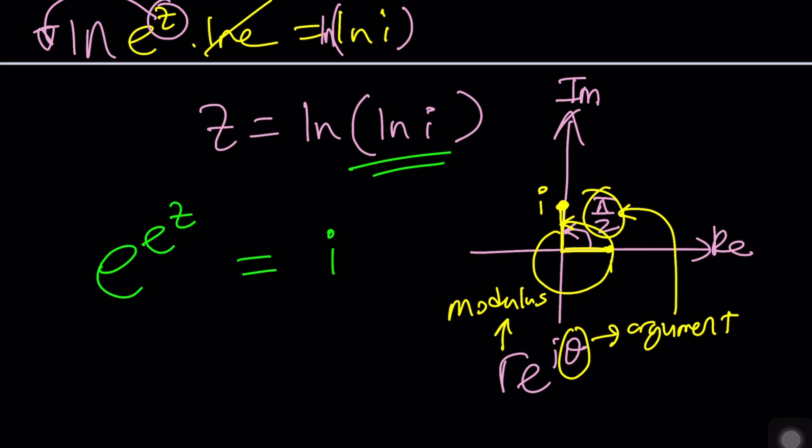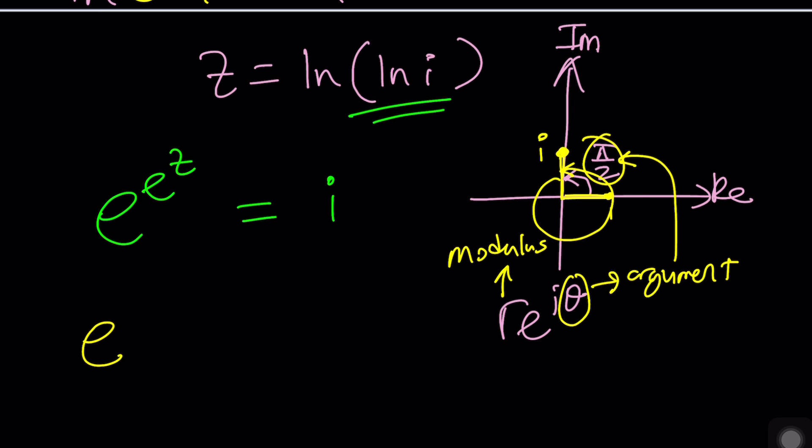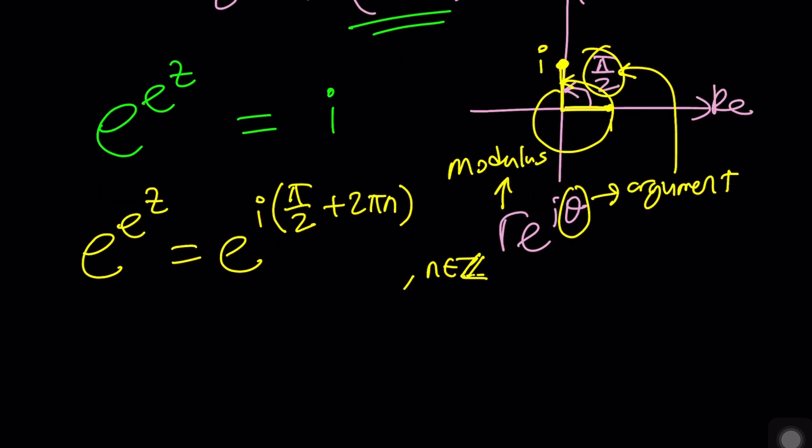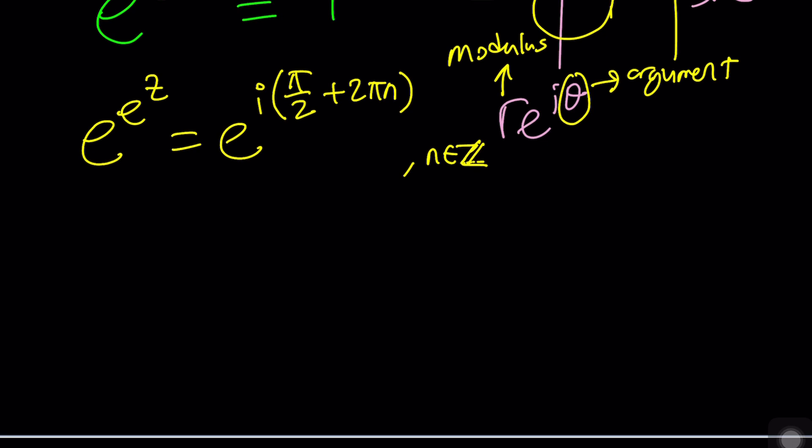E to the e to the z equals e to the power, r is one so I didn't write it, i times theta. Theta is pi over two but that's called the principal argument which is the smallest value between negative pi and pi. And then we're going to add two pi n where n is an integer, multiples of two pi in other words. This brings us to another level, one layer down. So if you natural log both sides at this point, this will make much more sense. Look, e to the z equals, now notice that we're comparing this to this because ln e is one, so we're going to have now i times pi over two plus two pi n and we have to be careful.